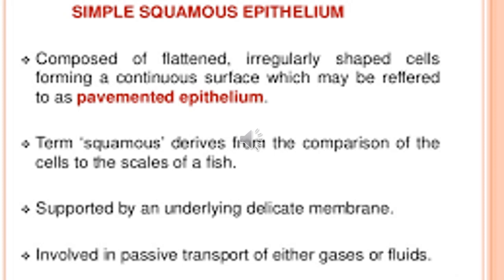When sections are made perpendicular to the epithelial sheet, the individual cell shows a fusiform or spindle-shaped appearance, because the central region is thicker due to the nucleus while the peripheral cytoplasm is very thin. When cells lie very close to each other they give a pavemented epithelium appearance. They are supported by the underlying delicate membrane and are involved in passive transport of gases or fluids.